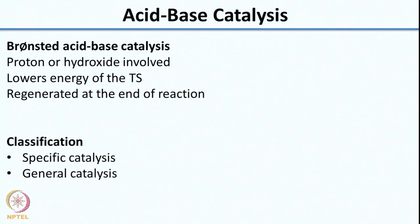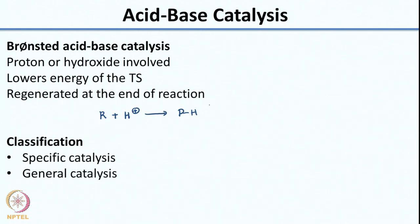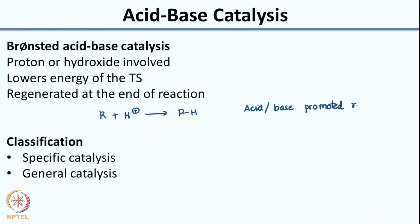These are called Bronsted acid-catalyzed reactions. There will also be examples where you have the acid or base being consumed. If you have your reactant plus H+, when you get back your product you do not get back your H+ - it is in some form incorporated in the product. In these cases, these reactions are called acid- or base-promoted reactions. They cannot be called catalyzed because your acid or base is not regenerated at the end.